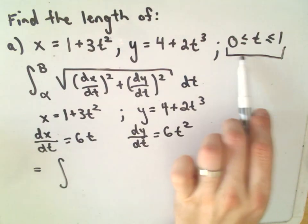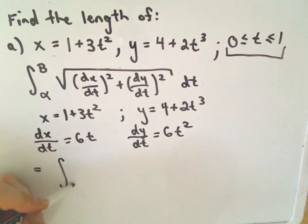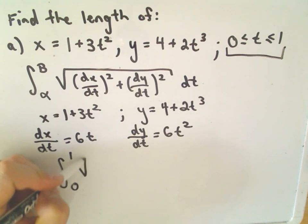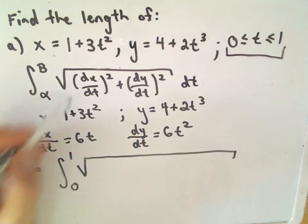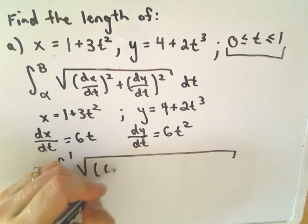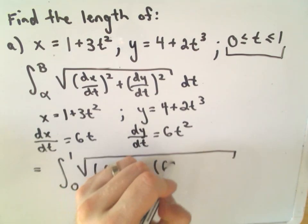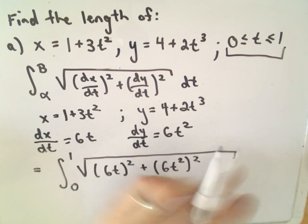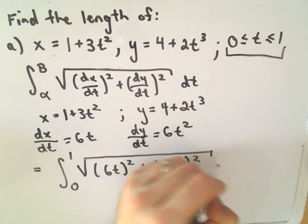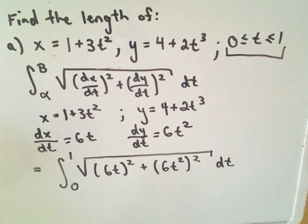So all right, so my interval 0 to 1 is simply going to be my limits of integration, and now we just have a tedious integral. So dx dt, that's 6t quantity squared, dy dt which was 6t squared quantity squared, and we have to integrate all of that with respect to t.